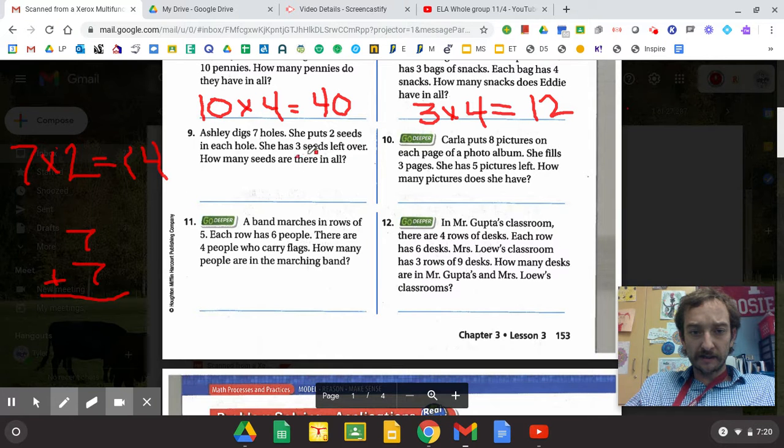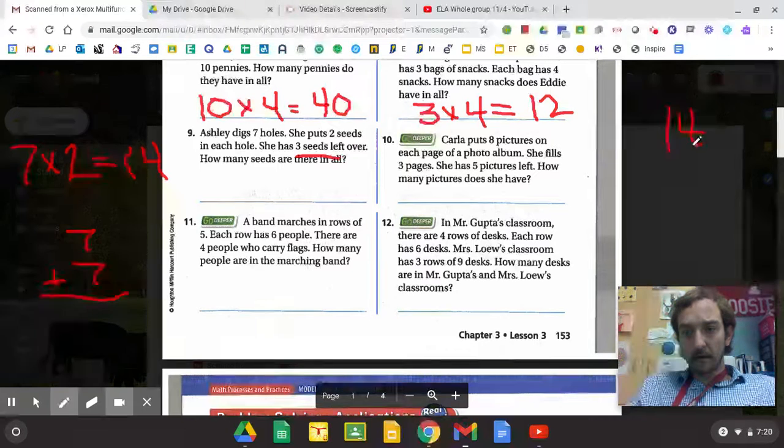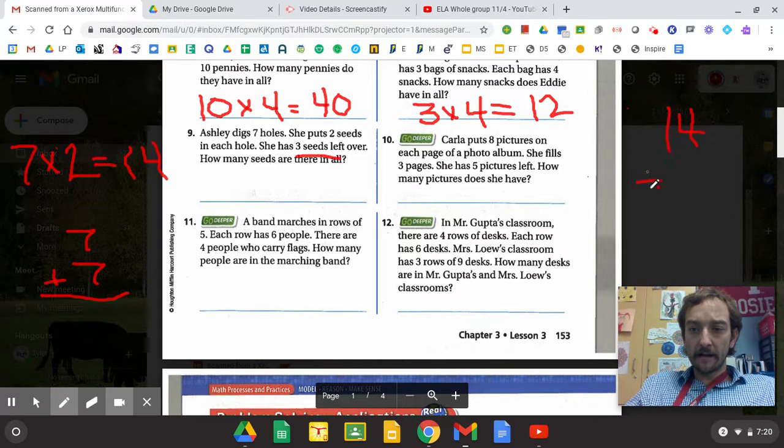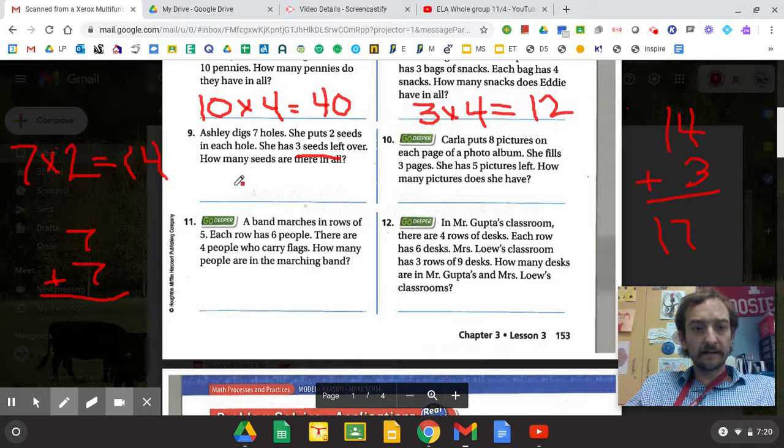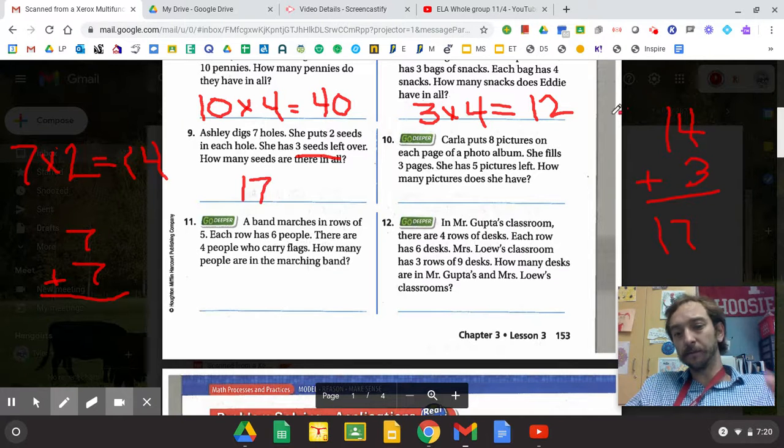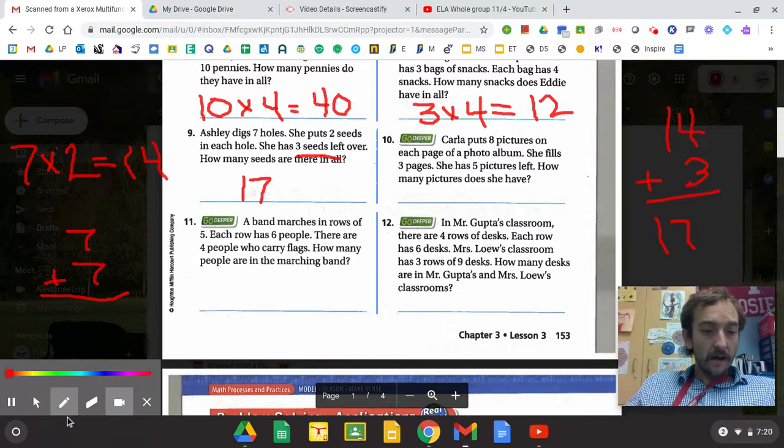But we're not done yet because she has these three seeds left over. So you're going to take your 14 and then you're going to add the leftover three seeds to get to 17 seeds. Because they want to know in all. So you've got to make sure you add that leftover.